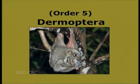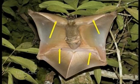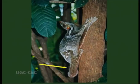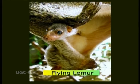Order 5: Dermoptera. Derm meaning skin, Pteron meaning wings. Four equal sized limbs are present. The tail is included in the lateral furry skin fold called the Patagium. They are nocturnal and live in trees. The living mammals are gliding mammals called Flying Lemur, resembling a flying squirrel. Examples: Flying Lemurs.